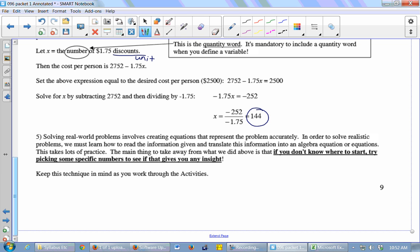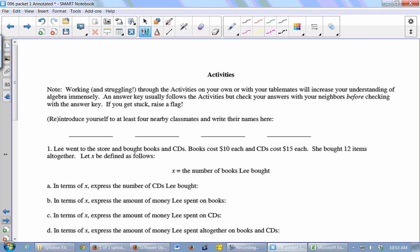The main thing to take away from what we did today is that if you don't know where to start, try picking some specific numbers and see if that gives you any insight. Just say what if I do 10? What if I do 20? What if I do 30? And once you do two or three or four numbers you might go aha, I see a pattern, I can put an X in for the number. Keep that technique in mind while you work through the activities which start on the next page.